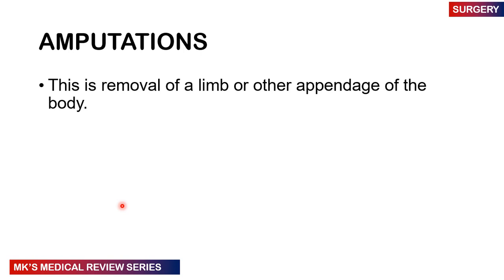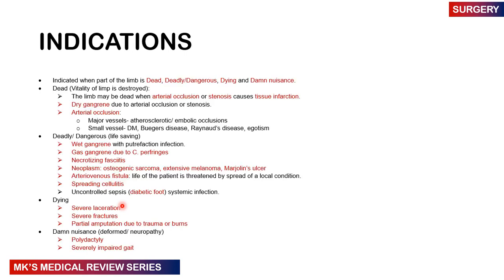Amputations are of different kinds, and there are certain indications for each. A helpful way to remember them is the four or five Ds: dead tissue, deadly or dangerous tissue, dying tissue, and a damn nuisance.